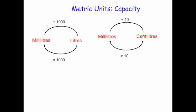Some other ones you may see are milliliters and centiliters. 'Milli' means a thousandth and 'centi' means a hundredth of a liter. To convert from milliliters to centiliters, you divide by 10. Conversely, to go from centiliters to milliliters, you multiply by 10. For instance, 23 centiliters would be 230 milliliters, and to go back again you'd divide by 10.